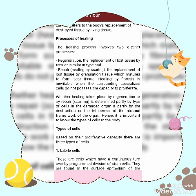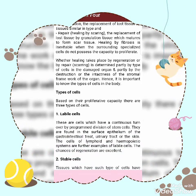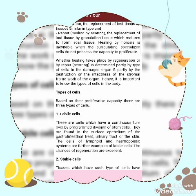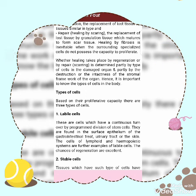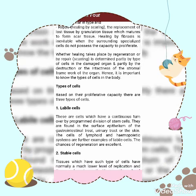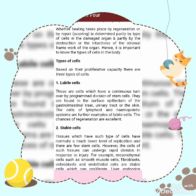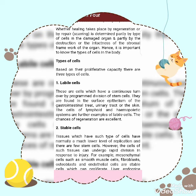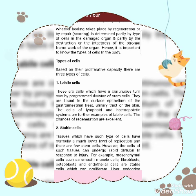Based on their proliferative capacity there are three types of cells. First are labile cells, which have a continuous turnover by programmed division of stem cells. They are found in the surface epithelium of the gastrointestinal tract, urinary tract, and the skin. Cells of the lymphoid and hematopoietic system are further examples of labile cells. The chances of regeneration are excellent.